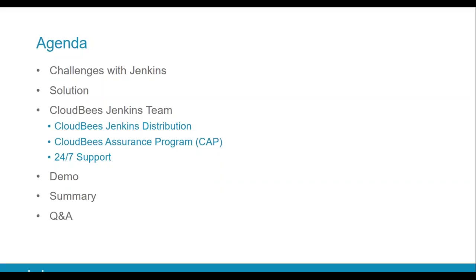Specifically, if you are a team trying to use Jenkins for continuous delivery, what are the challenges with using that product out of the box? One way to answer that challenge is with CloudBees Jenkins Team. I'll drill down on some of the components — the CloudBees Jenkins distribution, the CloudBees Assurance Program, which is a verification process for vetting plugins and Jenkins core, and the support aspect. Following that, Andres will do a demo highlighting features through Beekeeper, then we'll do a quick summary and open it up for Q&A.